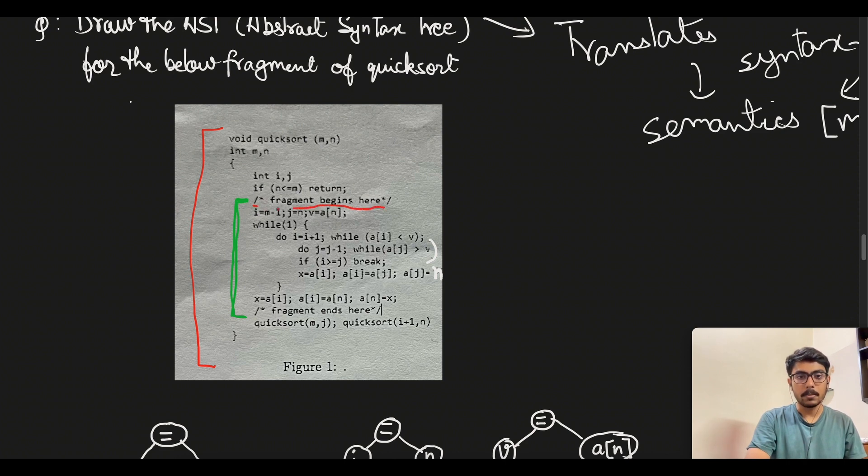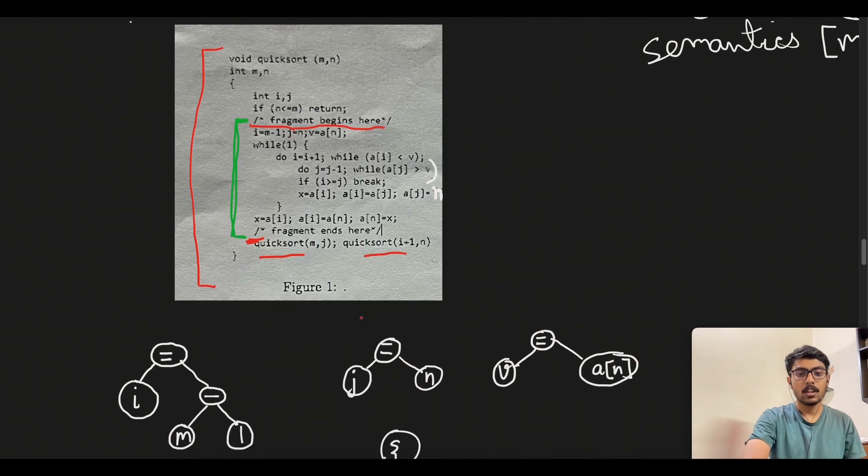We need to write the abstract syntax tree for this particular code segment which begins here and ends here. We are calling the quicksort function here and again at one plus one to n, means at two particular indices or ranges.